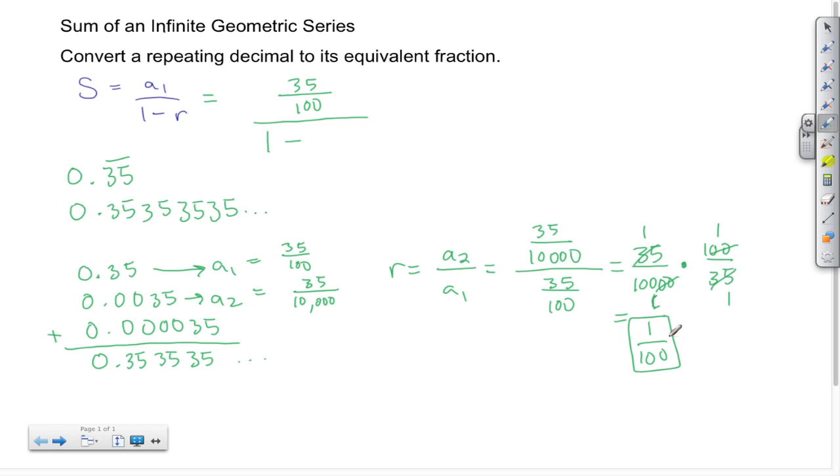And again, 1 over 100 is between negative 1 and positive 1, so I put this in place: 1 over 100. I rewrite the numerator, 35 over 100. This 1 turns into 100 over 100...